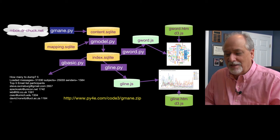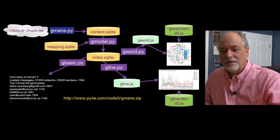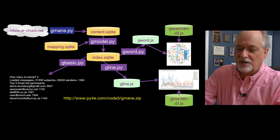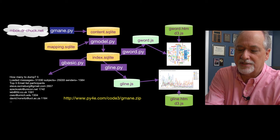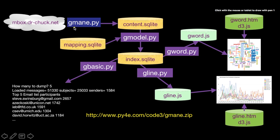Here's basically the flow of the data in this particular application. You are going to have the restartable spider that talks to the API at mboxdrchuck.net, which has a scalable copy of all this information. It's going to produce a kind of raw database — not a very clean database, it's sort of a mess.